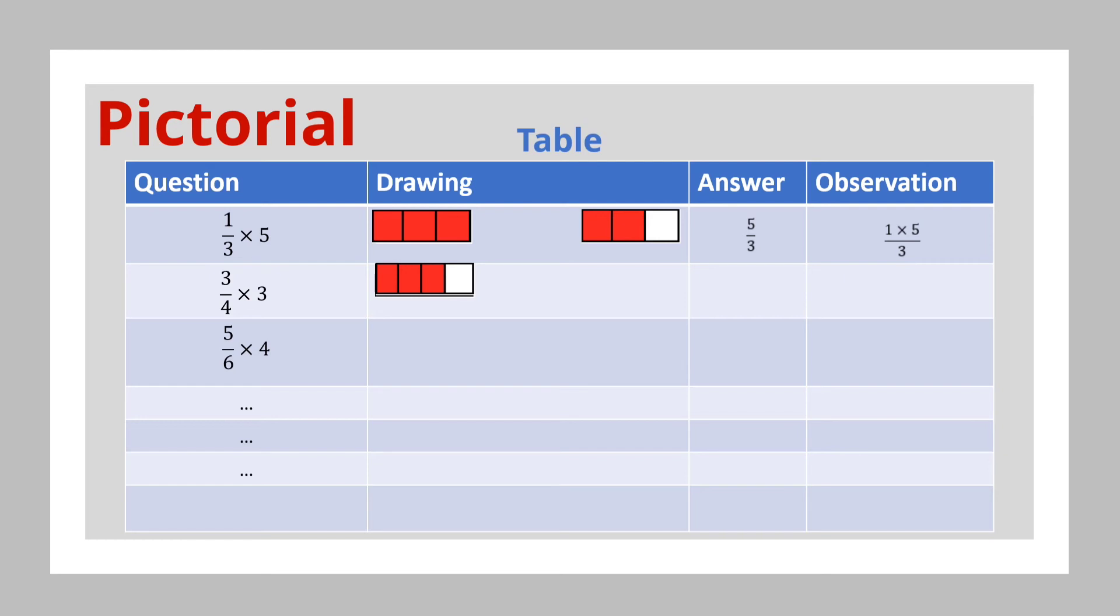But we need three sets of these. So the child will draw a second and a third bar and divide them into four equal parts, then shade three of the four parts like this. Then the child will count how many parts that are shaded, and we would have nine quarters. Then you have the child observe that three quarters times three is equal to nine quarters, but that could have been obtained by multiplying three times three, which is equal to nine. So we have nine quarters.